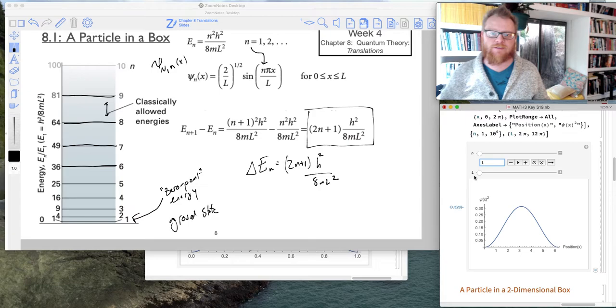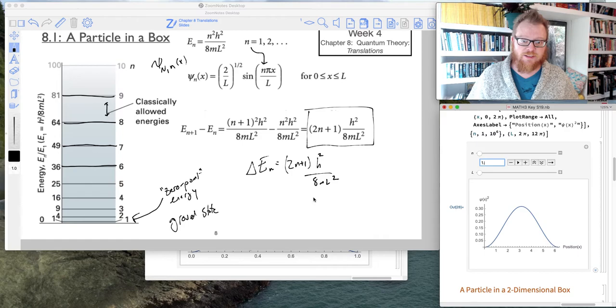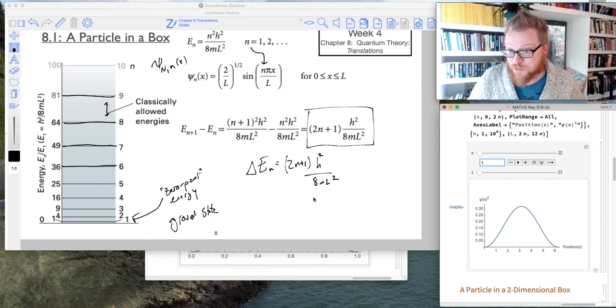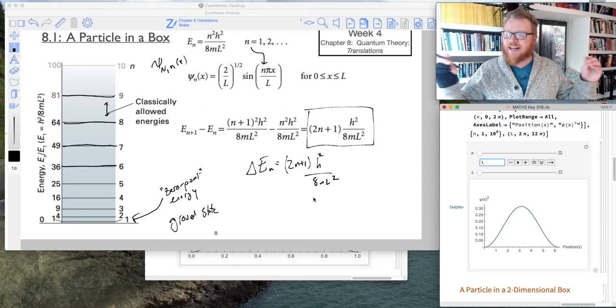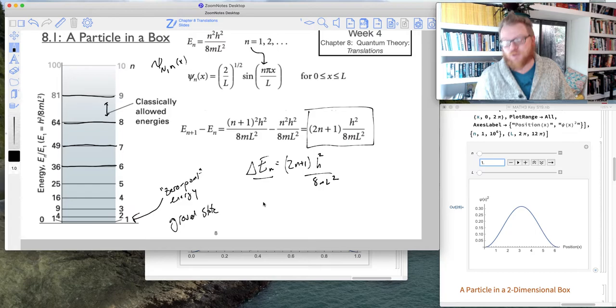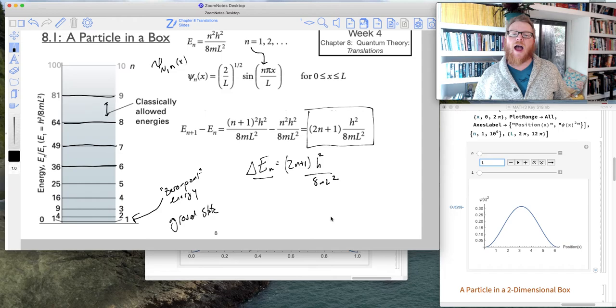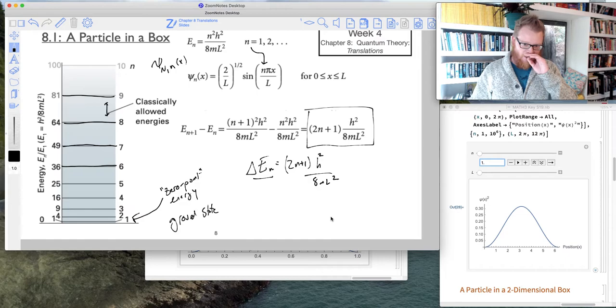So what does that mean for quantum mechanics or classical mechanics? Well, there's some really cool things that I'm going to show you at the conclusion of some of these slides, that there are physical colorimetric observations we can make. So as the box is getting bigger, our wavelength is getting bigger, meaning our energy delta E, the difference between energy levels, is getting smaller.